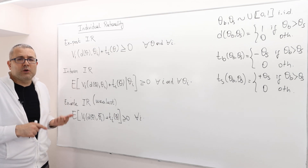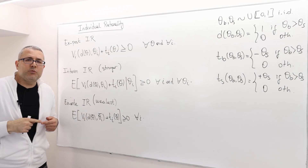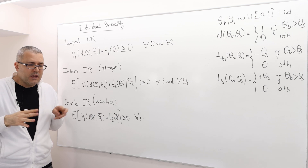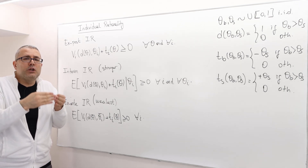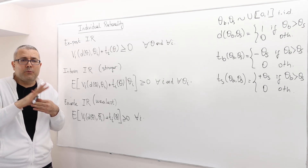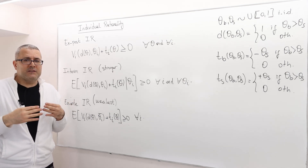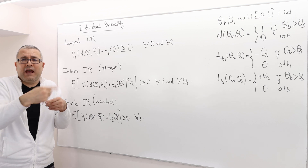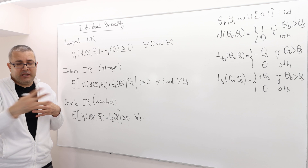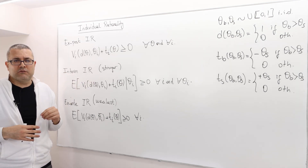A slightly stronger version: what if we ask the participants right after they learn their own types? That means each player learns his true type, but is still unaware of his opponent's real types. Before they join the mechanism, we ask them: do you now want to participate? If all agents say yes, we call this mechanism interim individual rational.